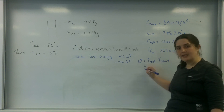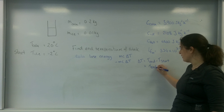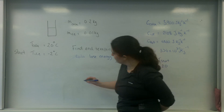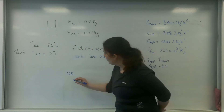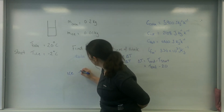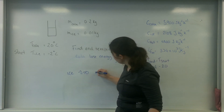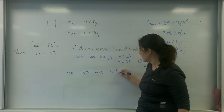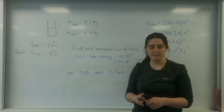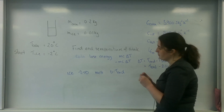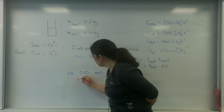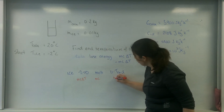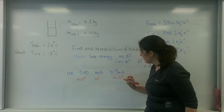So in this case that is my end temperature — which I don't know — minus 20. The ice is going to first go from minus 2 to 0, then it is going to melt, and then it is going to go from 0 to my end temperature. So I'm going to have three clear stages: MC delta T, then ML, then MC delta T again.